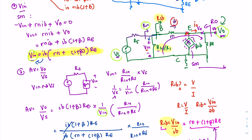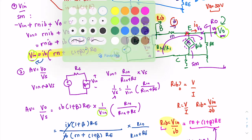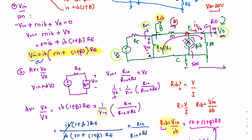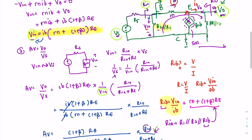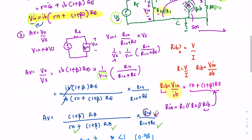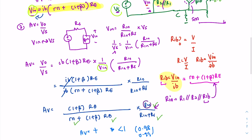As an addition: if the circuit has an Early voltage VA — for example 50 volts — you need to add R naught between C and E. This means at the output side you now have RE parallel to R naught, and the equations are updated accordingly with RE parallel Rnaught replacing RE throughout.